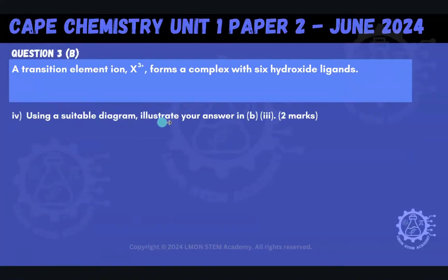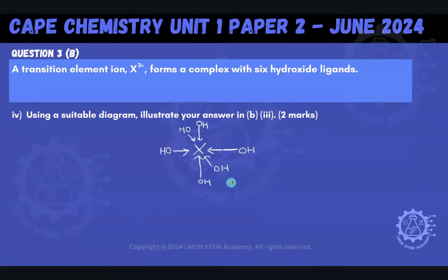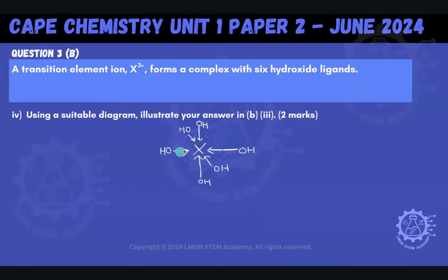It says using a suitable diagram, illustrate your answer in part B3. We do a quick sketch of that octahedral complex. Here I have my transition metal in the middle with my six hydroxide ligands surrounding it. Ligands donate a lone pair to the transition element ion, so we draw an arrow coming from each hydroxide ligand — specifically from the oxygen, because that's where the lone pair is — pointing inward to the central metal ion. Six arrows pointing inward trace the octahedral shape, illustrating the answer for two marks.